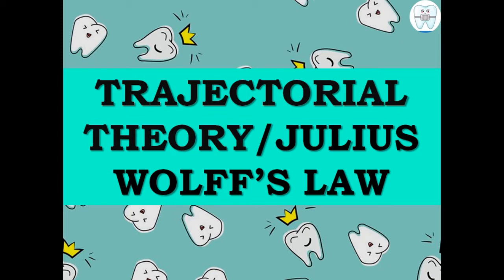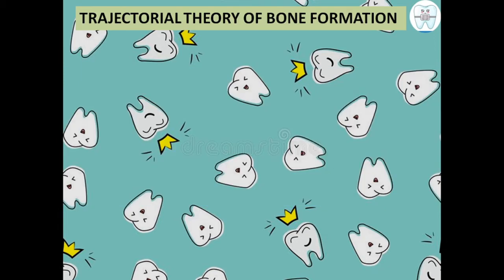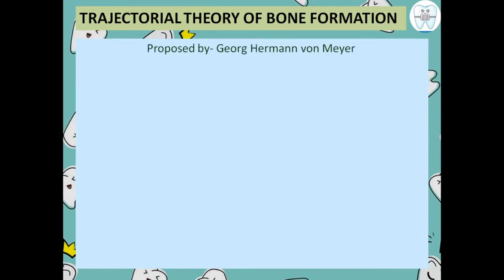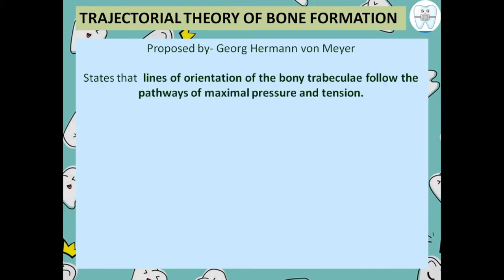Now, what is the Trajectorial Theory? Trajectorial Theory of Bone Formation — it was proposed by George Hermann von Mayer. It states that lines of orientation of bony trabeculae follow the pathways of maximal pressure and tension. Bony trabeculae ki jo lines of orientation hain, jo decide karengi ki bony trabeculae kaisi hongi, woh maximal pressure or tension ke path ko follow karte hain. Jis area mein sabse zyada pressure or tension hoga, vohan pe woh lines ban jayengi.